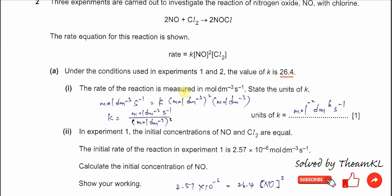Part 1. The rate of reaction is measured in mol dm⁻³ s⁻¹. State the units of k. We substitute the units into the rate equation: mol dm⁻³ s⁻¹ = k × (mol dm⁻³)³. After cancellations, you get mol⁻² dm⁶ s⁻¹. Just do the comparison like this.